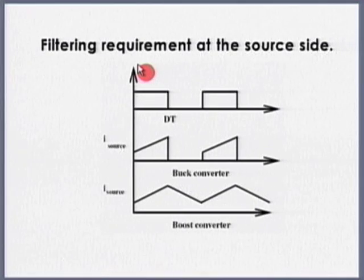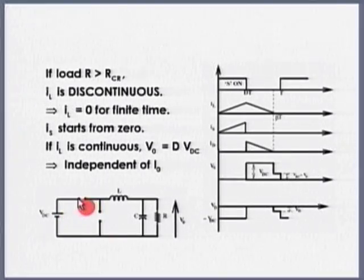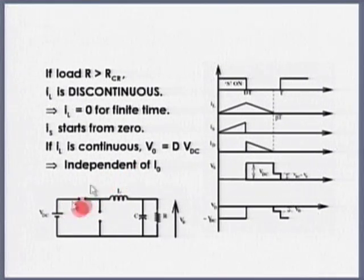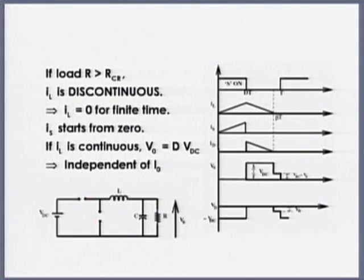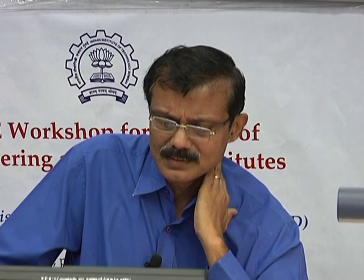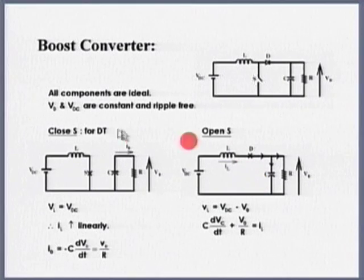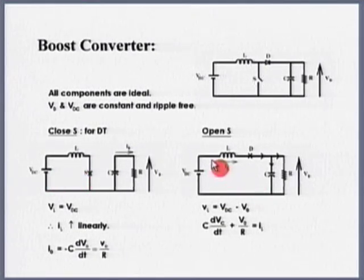The filtering requirement: the source current waveform for a buck converter shows a step jump — the moment you close the switch, source current has to change instantaneously, so dI/dt is very high. Special filters may be required at the input. For the boost converter, the inductor is always in the circuit, so source current increases linearly and decreases linearly — the input stage can be represented as a current source, giving almost excellent input characteristics.